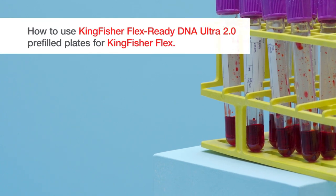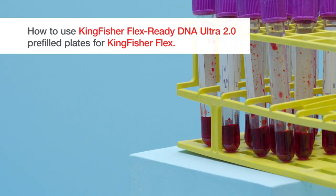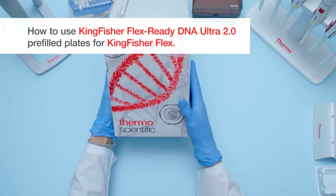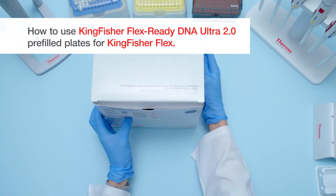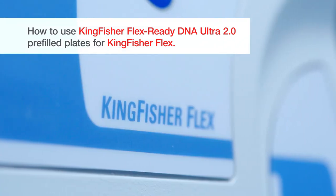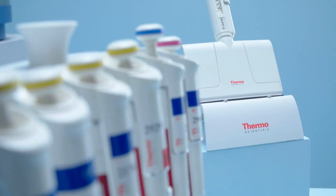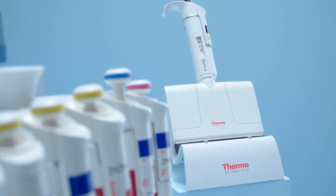This video will show you how to process samples of blood using the Kingfisher FlexReady DNA Ultra 2.0 Pre-Filled Plates on the thermoscientific Kingfisher Flex Instrument. A similar process can be used for other sample types.